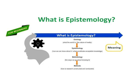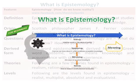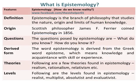What is epistemology? Epistemology is the branch of philosophy that studies the nature, origin, and limits of human knowledge. Scottish philosopher James F. Ferrier coined the term epistemology in 1856.